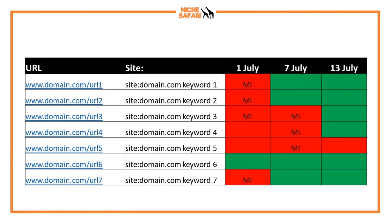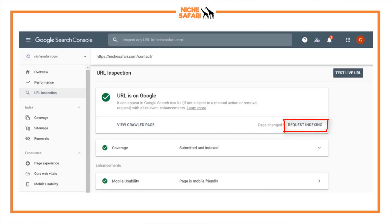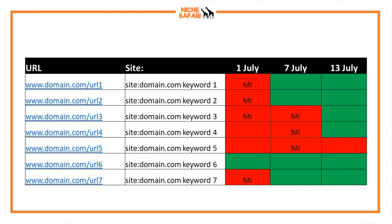To track this I've created a spreadsheet with the URL down one side and the site colon search with the keyword in the next column. In subsequent columns I have the date I did the check, and I mark it red if I can't find the article using the site colon search and green if I can. This lets me quickly copy and paste each keyword to check whether the article is showing in the index. I write 'MI' if I tried to manually index that article on that day using the request indexing button in Google Search Console, then come back a couple of days later to check again.